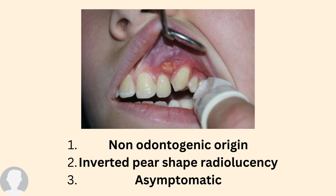Let's talk about the clinical features of the globulomaxillary cyst. It is of non-odontogenic origin, meaning it is not tooth related, so the associated teeth are non-carious. When you take an OPG or periapical x-ray, you will see an inverted pear-shaped radiolucency located between the lateral incisor and canine. In addition, it is completely asymptomatic and discovered routinely by clinical examination.